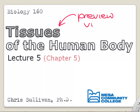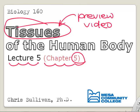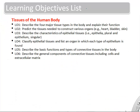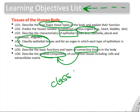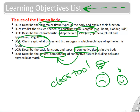Welcome. This is a preview video for lecture five. We're going to cover tissues we find in the human body. The learning objectives: we'll cover the four tissues, we'll build some organs, and then we'll focus on epithelial and connective tissues today and in class as well.